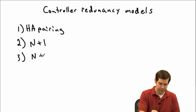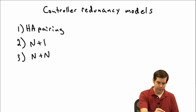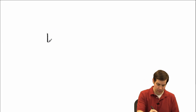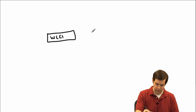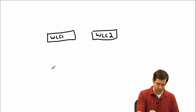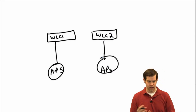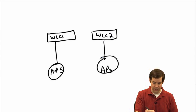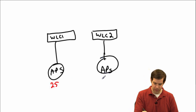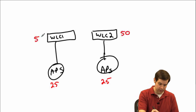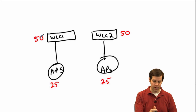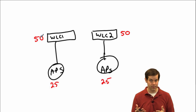Number three: N plus N. Similar in concept to N+1, except all controllers are always serving access points at all times. In a simple two-controller example, maybe 25 APs are on Controller 1 and 25 on Controller 2, but we bought enough licenses to support all APs — 50 licenses on each. They're essentially half-utilized. If Controller 1 goes down, all 25 of its APs move to Controller 2, which has enough licenses to accommodate them.